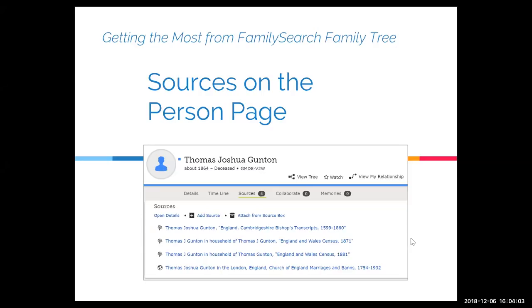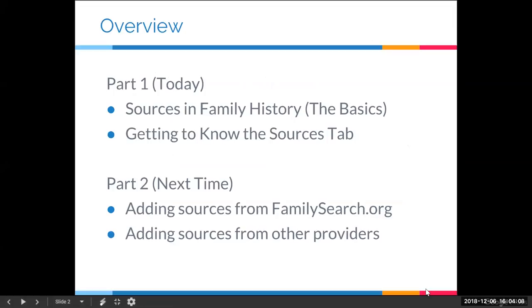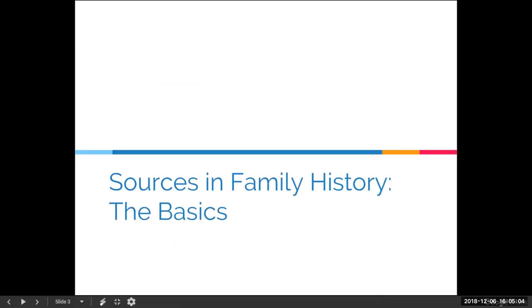When I started working on this webinar, it was getting very long — there's too much stuff. That's one reason we broke it into two parts. Today in part one, we're going to talk about sources in family history and some basics that are good to keep in mind as you're dealing with sources. Then we'll get to know the sources tab and look at different features and functions. In our webinar next week, we'll talk about how you actually add sources — one from FamilySearch.org, and the other from providers such as Find a Grave and Ancestry.com.